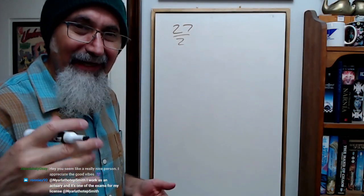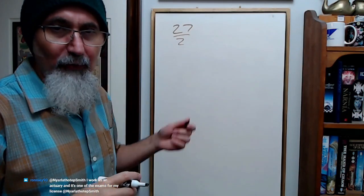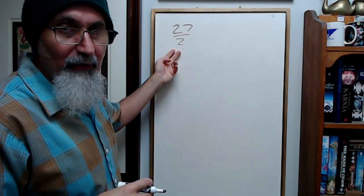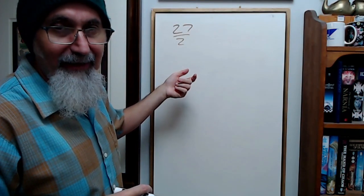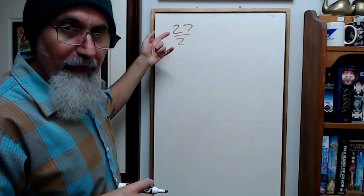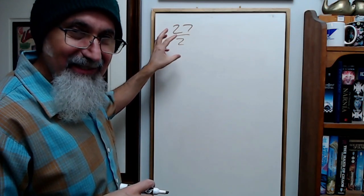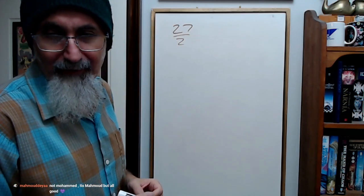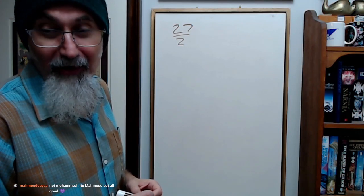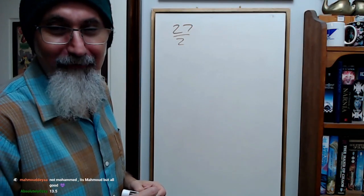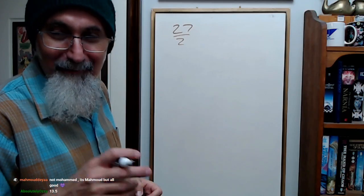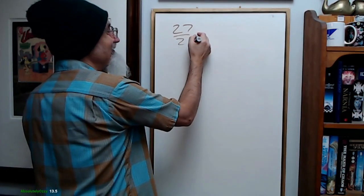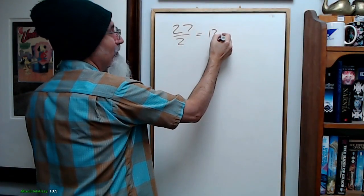Aussie, do you know what that is just off the top of your head? What's 27 divided by 2? If you had 27 apples and you're going to split it between two people, how many apples does each person get? Not Muhammad, it's Mahmoud. Oh, Mahmoud, but all good. Mahmoud, how are you doing? 13.5. Exactly, Aussie.